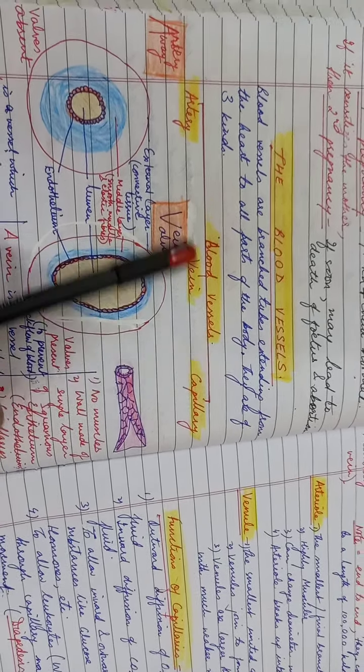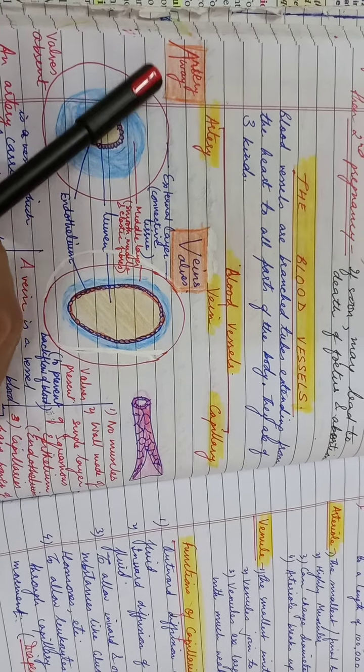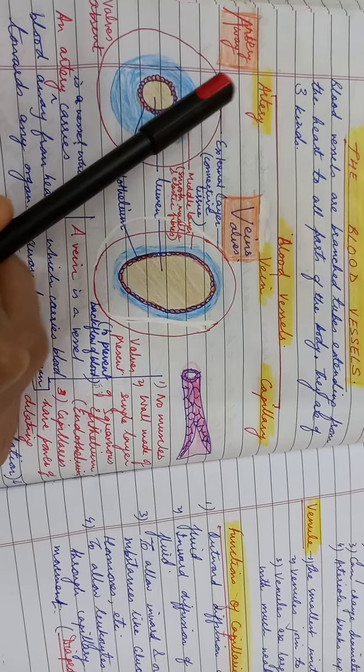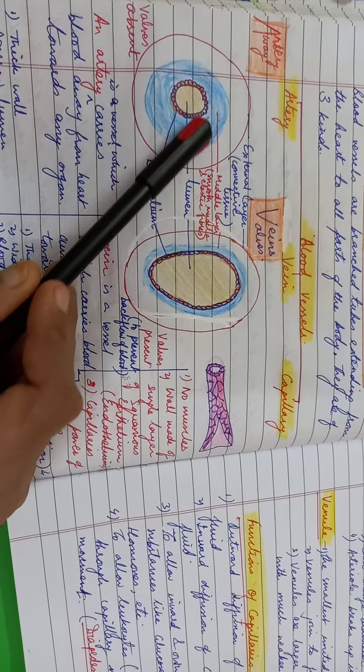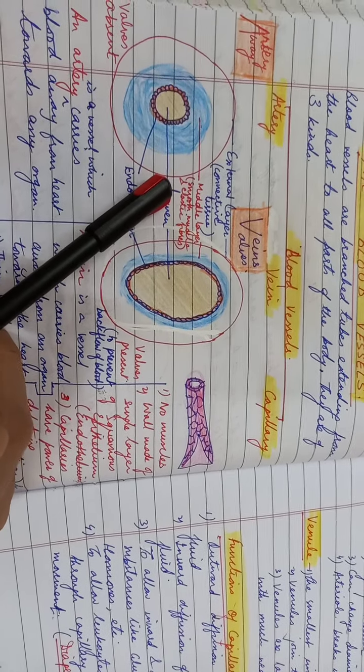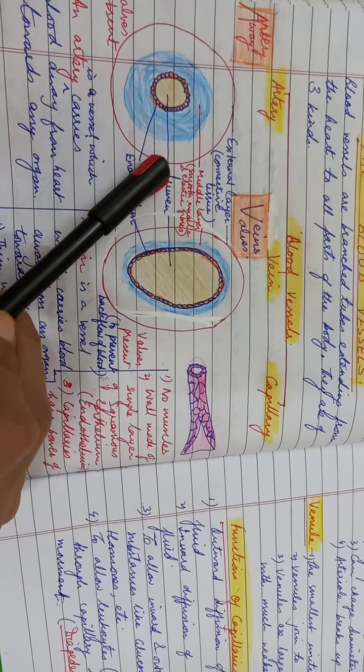I like to make some clear key note to remember for always. Remember A for artery and A for away. That is, arteries are those type of blood vessels which carry the blood away from the heart towards any organ. This is the lumen of an artery, so they are carrying the blood away from the heart towards any organ.